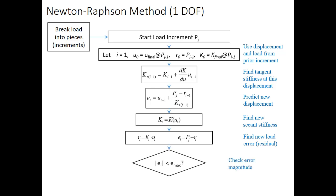That's what this check is. How is that error magnitude? Is it small enough? Now, we obviously can't get to 0, so we identify a max error we're willing to accept. If it is not small enough, then we're going to iterate inside this load increment.